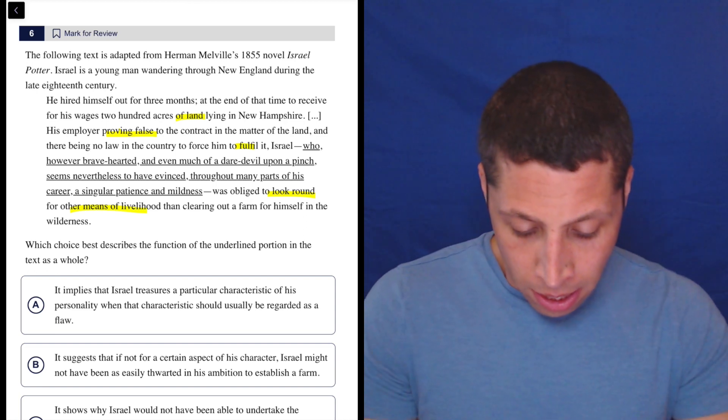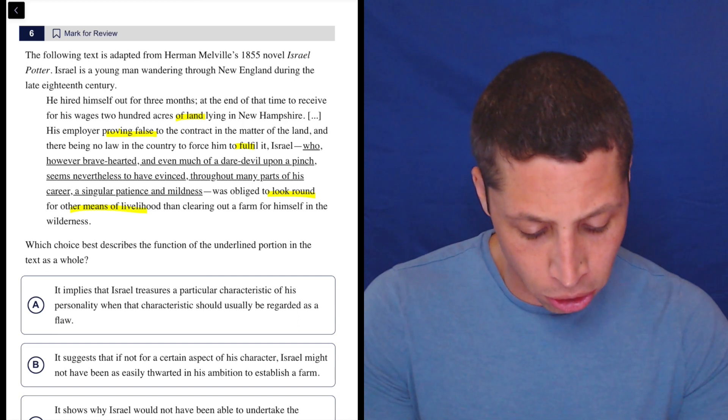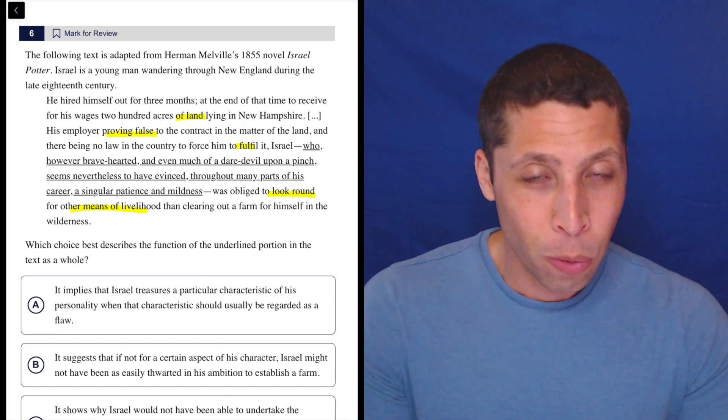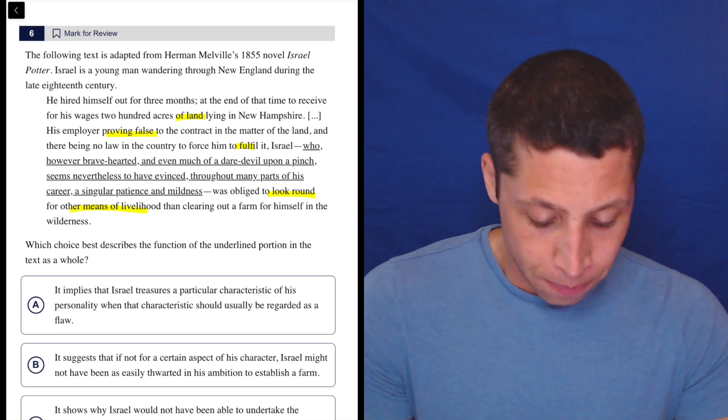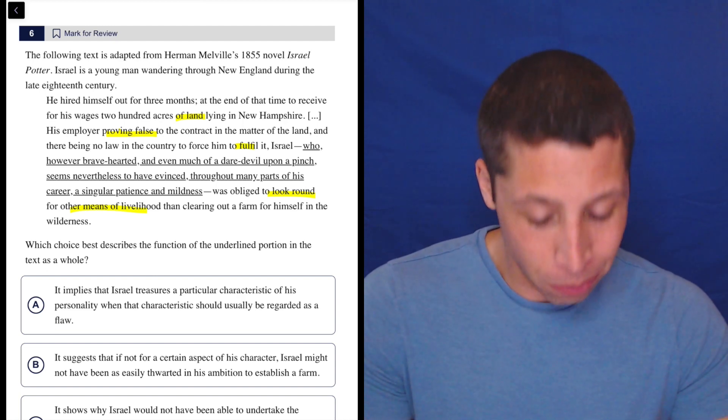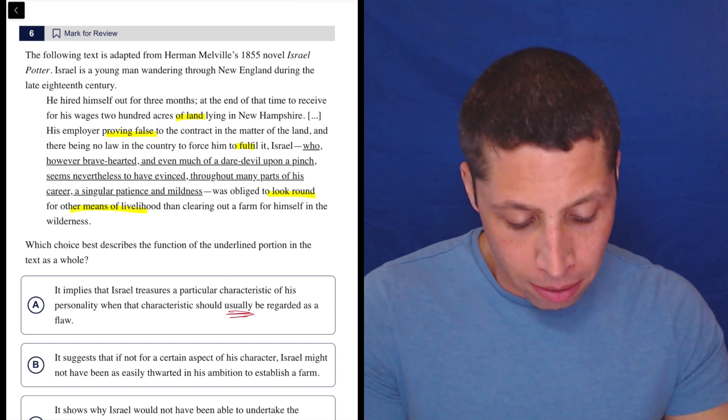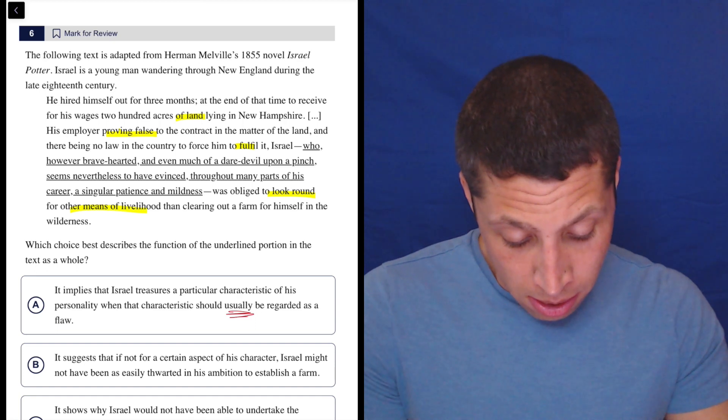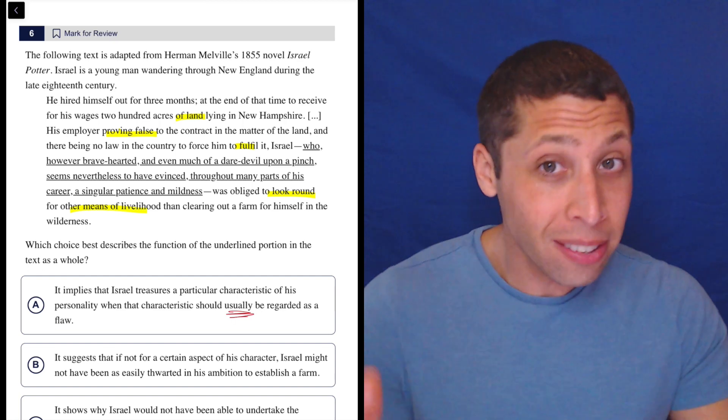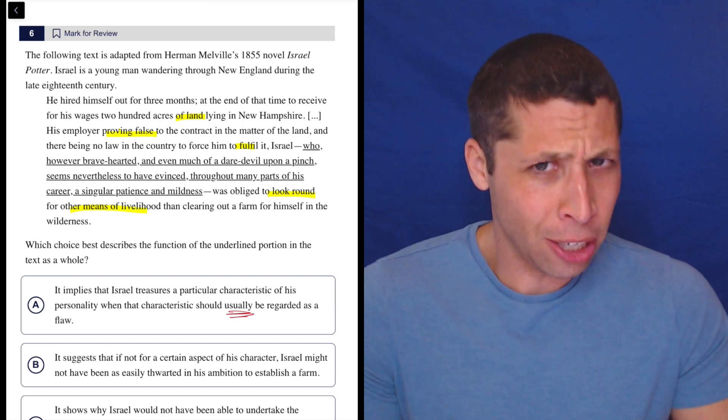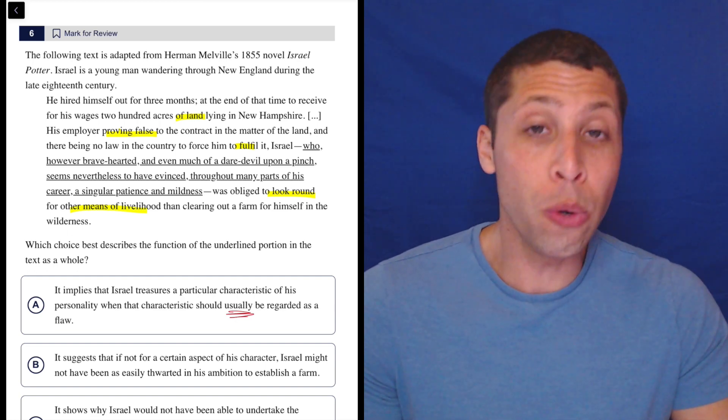This underlined part implies that Israel treasures a particular characteristic of his personality when that characteristic should usually be regarded as a flaw. Well, I don't know that he treasures it. I guess we're kind of just getting the narrator's perspective, aren't we? And plus, the thing that really bothers me here is usually. What is the characteristic that should usually be regarded as a flaw? Being bravehearted? Being a daredevil? Being patient and mild? The things that I could point to here seem to be generally good things, right? So maybe it's a flaw in this particular story, but I don't think they're usually a flaw.